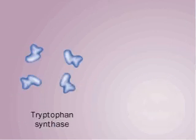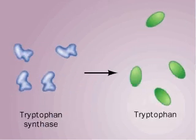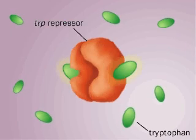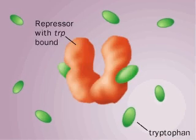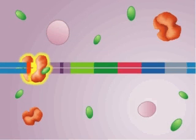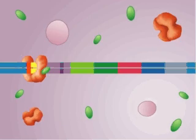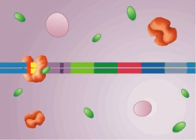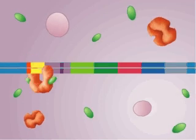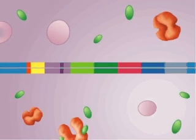As tryptophan is synthesized, it diffuses through the cytoplasm. When it encounters a trp repressor, it binds a site on the repressor, changing that protein's shape. The repressor can now bind the operator, block polymerase binding, and prevent transcription of the structural genes. Thus, tryptophan is said to be a co-repressor.